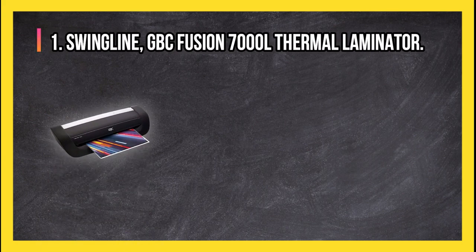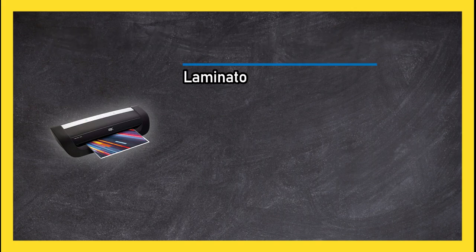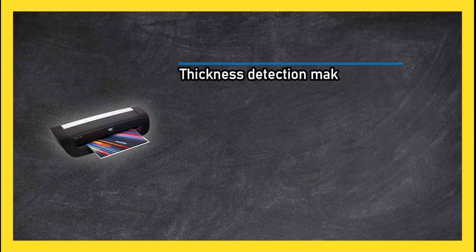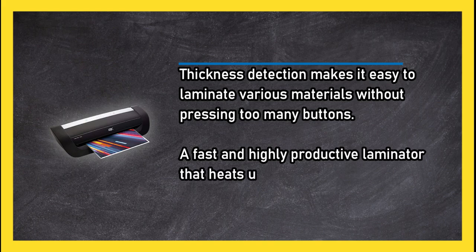At number one, Swingline GBC Fusion 7000L thermal laminator. Laminator quickly heats up and is ready to work. Can laminate quickly and with little to no errors. Thickness detection makes it easy to laminate various materials without pressing too many buttons. A fast and highly productive laminator that heats up quickly and has features such as thickness detection. Laminator can jam sometimes.